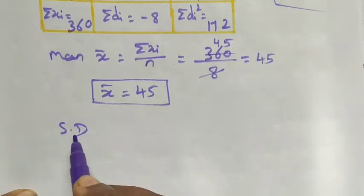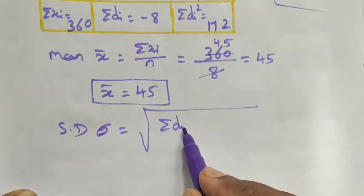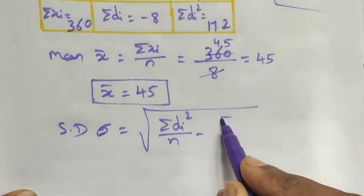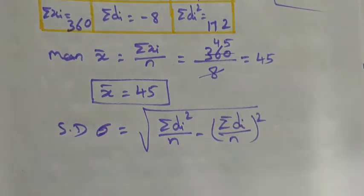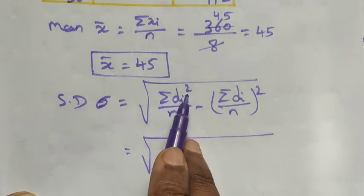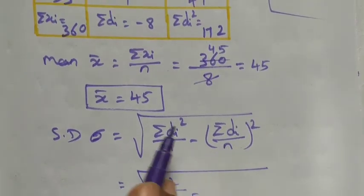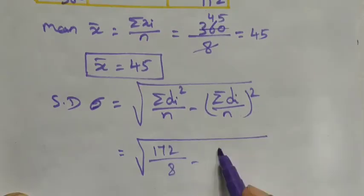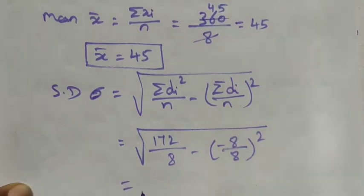The formula for standard deviation is σ = √(Σdi²/n − (Σdi/n)²). Substituting the values: σ = √(172/8 − (−8/8)²).